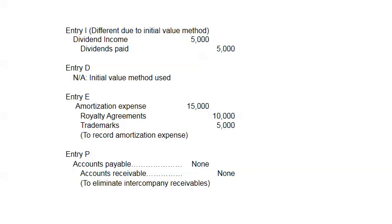Entry I is for income. Since it's the initial value method, we eliminate the investment revenue — in this case just dividend income — against the dividends paid. Because we handle dividends in Entry I, we don't need a separate Entry D. Entry E records the current year amortization: $10,000 for royalty agreements and $5,000 for trademarks — both intangible assets, so both go to amortization expense. Entry P had no intercompany receivables or payables, but it's included as a placeholder so you don't forget it.